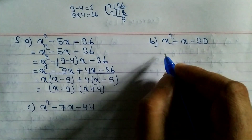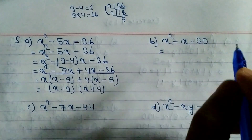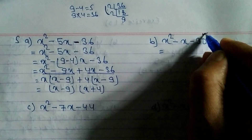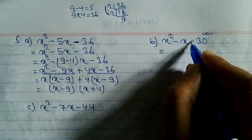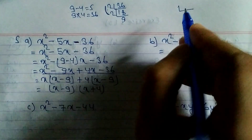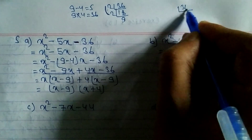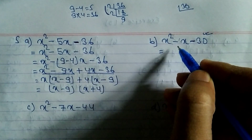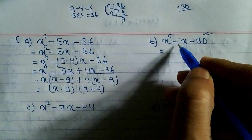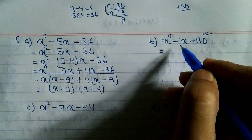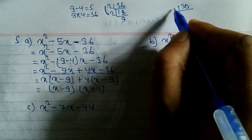Now look at problem b. We have to find factors whose multiplication is 30 and subtraction is 1. Directly, 6 minus 5 is 1 and 6 times 5 is 30, but if you have confusion we can work it out step by step.